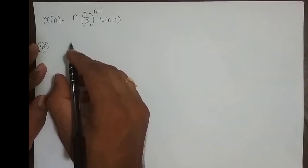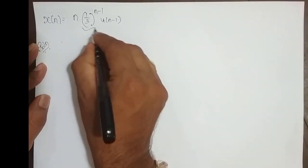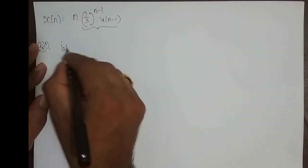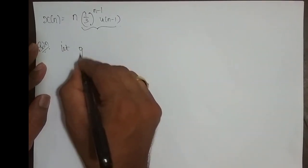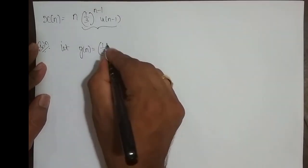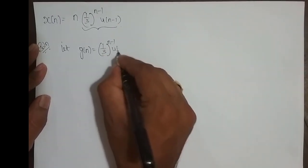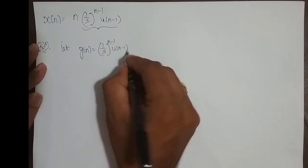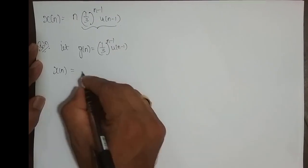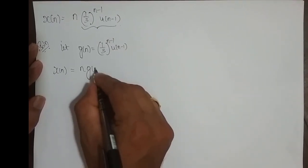What I will do is, I will take this part as g of n. So let the intermediate signal g of n equal 1 by 3 power n minus 1, u of n minus 1. So what happens to x of n now? x of n is n into g of n.